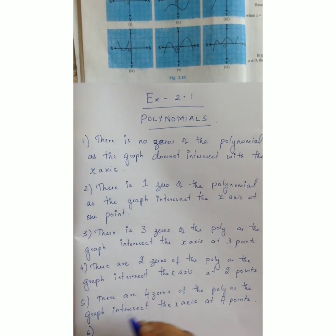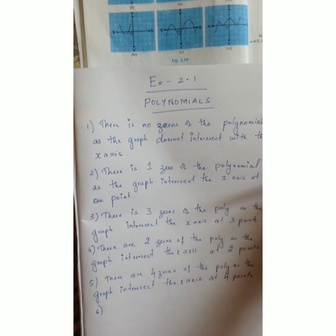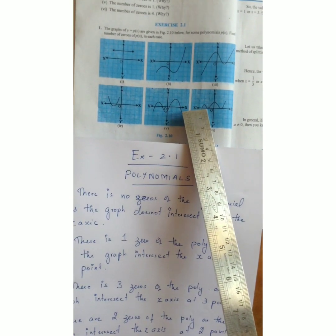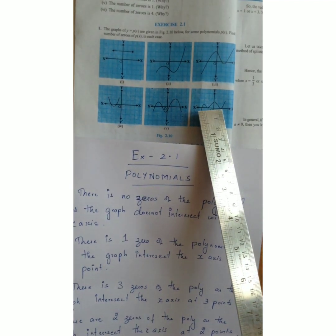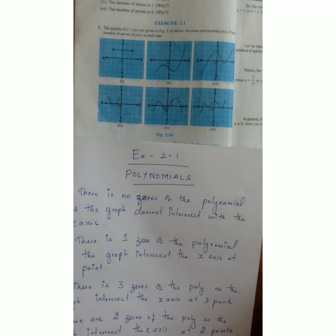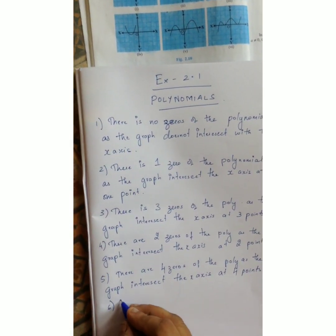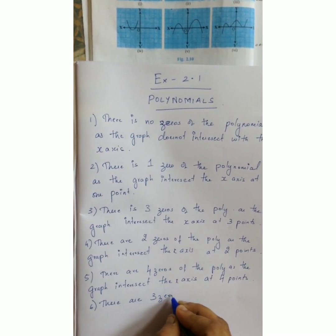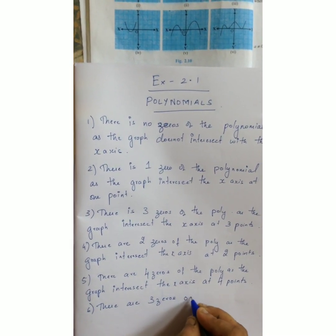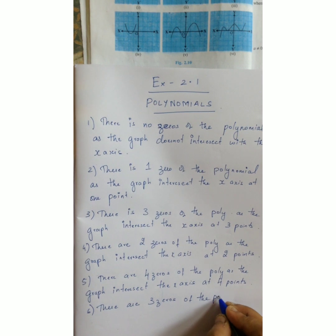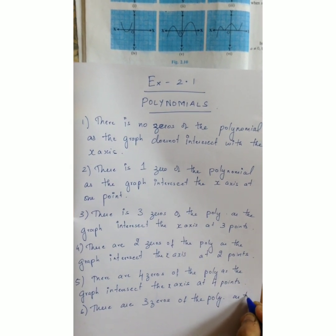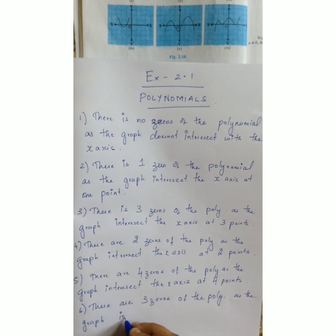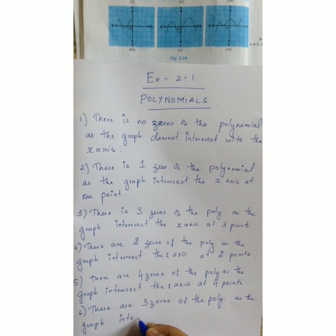In the sixth sum, the graph intersects at one, two, three. So the number of zeros is three. There are three zeros of the polynomial, as the graph intersects at three points.